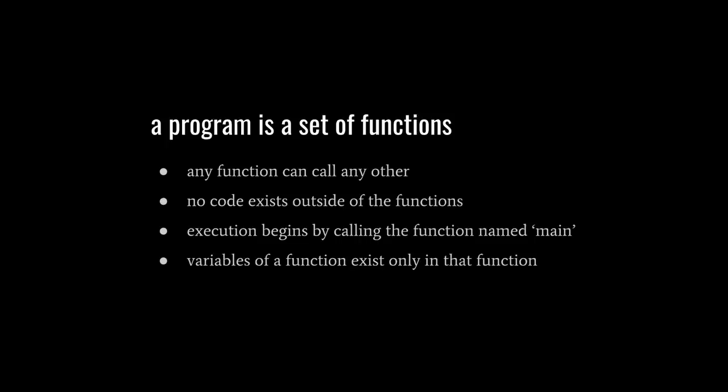Be clear that when a function calls another, when main say calls function foo, execution of main is in a sense suspended while foo executes and only once foo returns does main resume execution. Execution picks up from where foo was called and if foo returns a value that value can be used as an argument to another function call or as an input to an operation or it can be assigned to a variable, or in fact you can just ignore it, you can discard the value returned by a call.